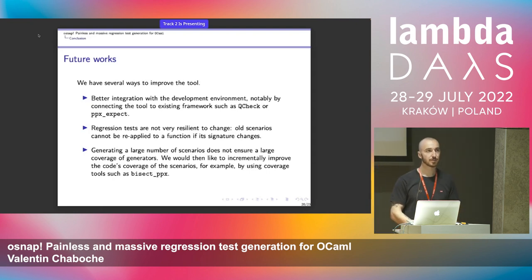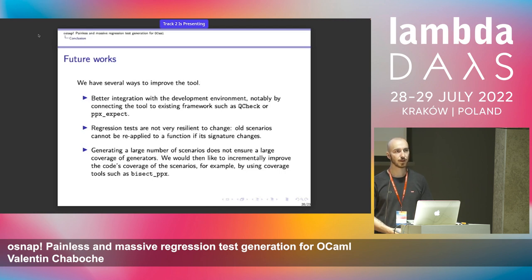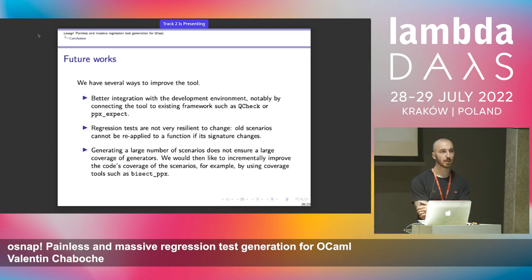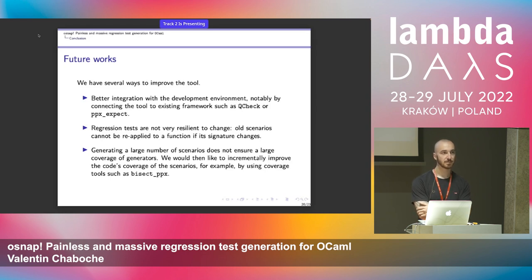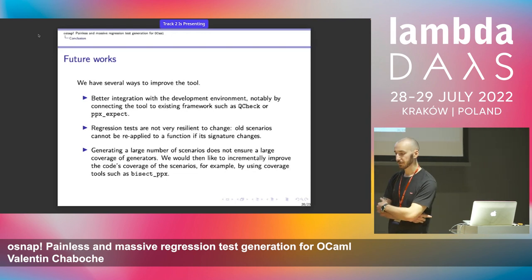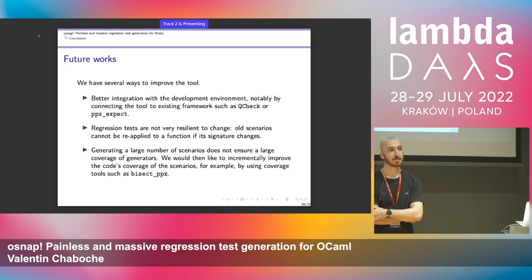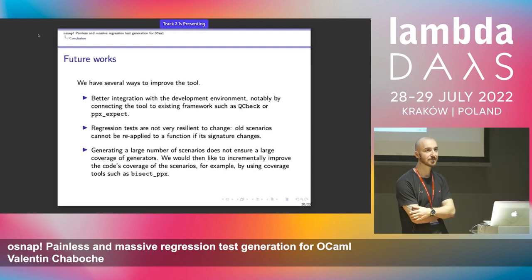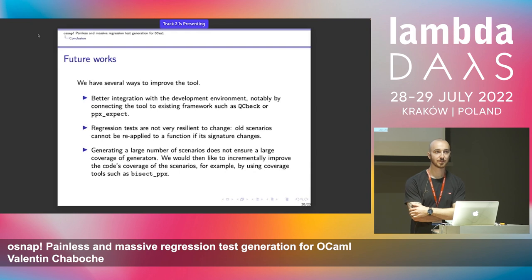There's a technique called concolic testing — where you do generation for property-based testing while simultaneously analyzing the code. Instead of guessing with fuzzing and hoping to cover all branches, concolic testing tries to understand the code and say 'I need this input to be more than zero or less than zero.' The approach with snapshots is very interesting, but the limitation is exactly on the generation side. Concolic testing is one approach, though it involves symbolic execution with a lot of complexity.